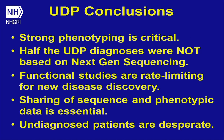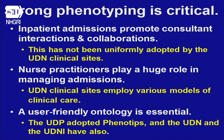The conclusions we've drawn over the years are that phenotyping is critical and important. The issue is how we can achieve the best phenotyping. Half of our diagnoses are not made on next-generation sequencing — they're made because we have doctors who come together, talk with each other, and see patients intensely for a week. Functional studies are rate-limiting and always will be, because sometimes a functional study requires a year or two or three years of work by a postdoctoral fellow.